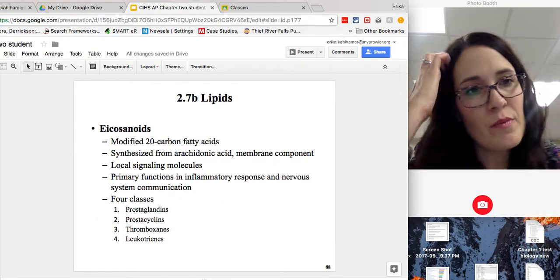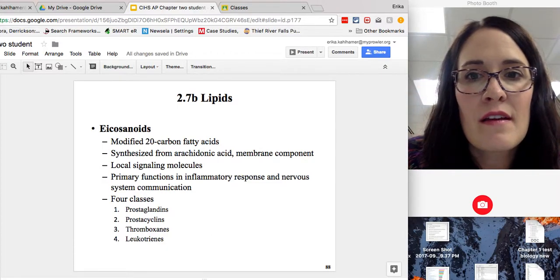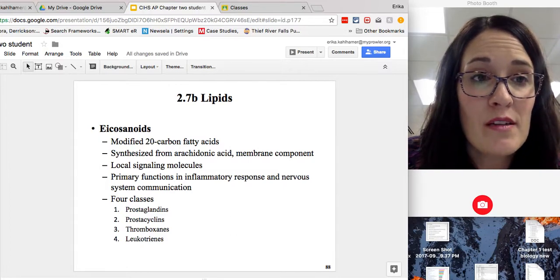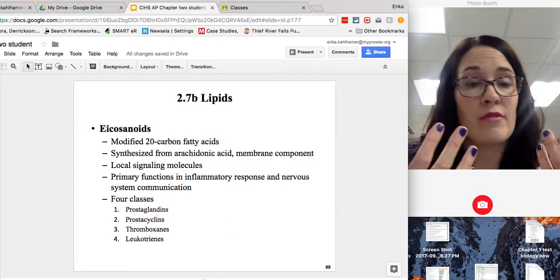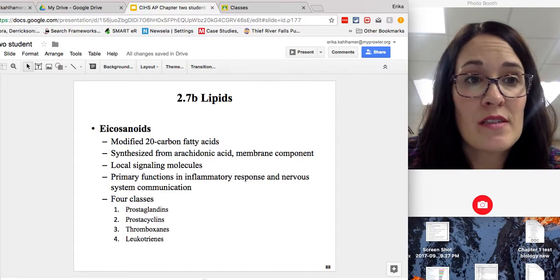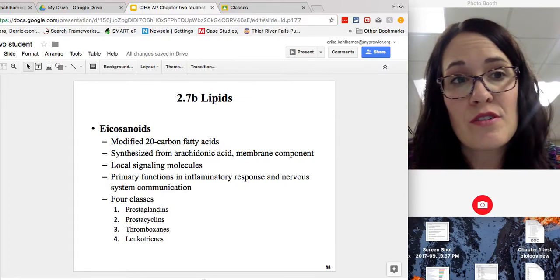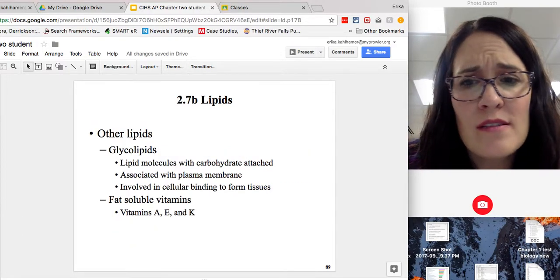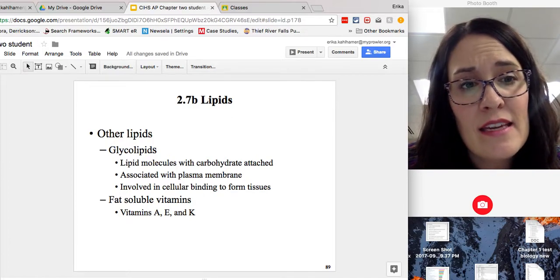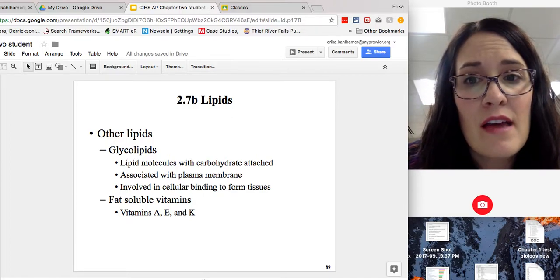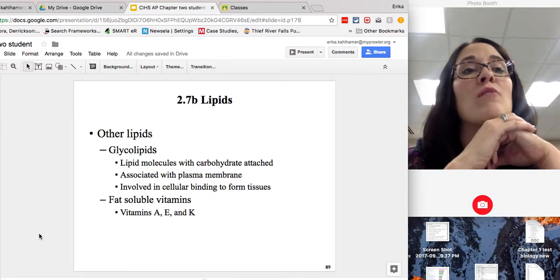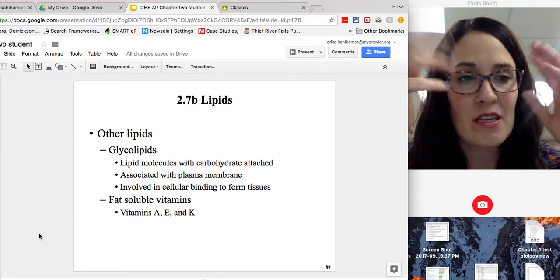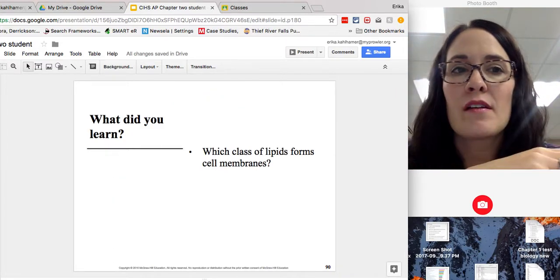Another lipid group, the eicosanoids. They're involved in the inflammatory response. So if you're ill, the inflammatory response kicks in, nervous system communications. These important fats are involved in that. And then some other special ones, vitamins A, E, and K you need. And then glycolipids, we're going to find outside of the cell membrane, involved in the cell binding to different other things.